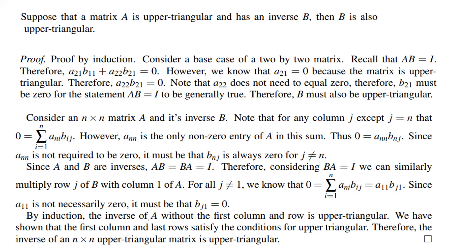By induction, the inverse of A without the first column and row is upper triangular. We have shown that the first column and last rows satisfy the conditions for upper triangular. Therefore, the inverse of an n by n upper triangular matrix is also upper triangular.